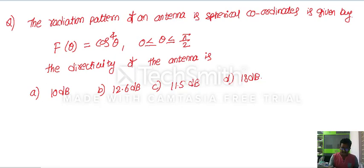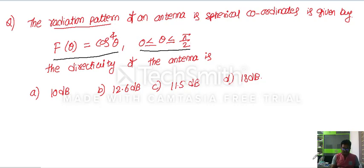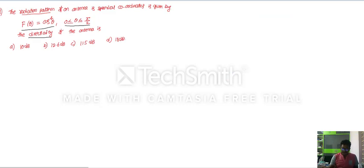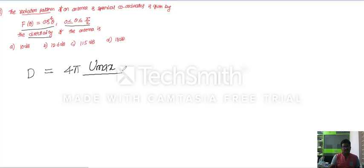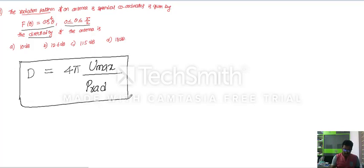In this problem, the radiation pattern of an antenna is given as f(θ) = cos⁴θ, where θ lies between 0 to π/2. We are asked to find the directivity. The directivity D is given as 4π times U_max — the maximum value of radiation intensity — divided by the radiated power. This is the formula for directivity.